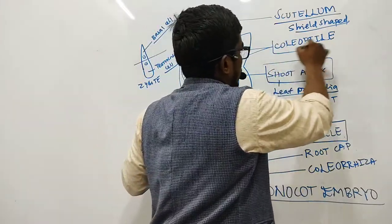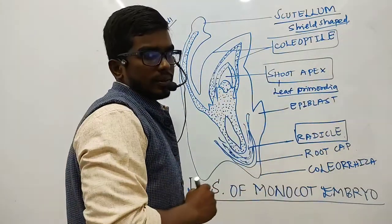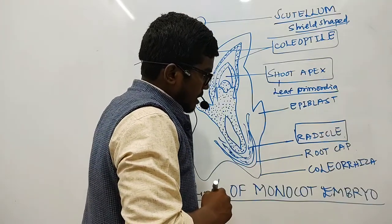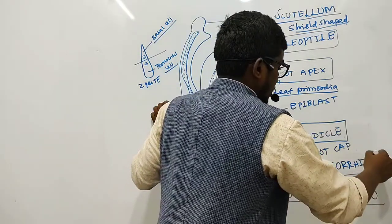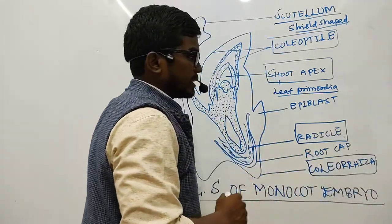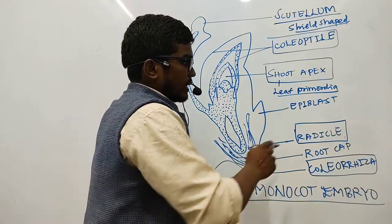When we consider the radicle part, the coleorhiza covers the radicle part and gives protection to the radicle part. But let me tell you the radicle part is just covered by the root cap.